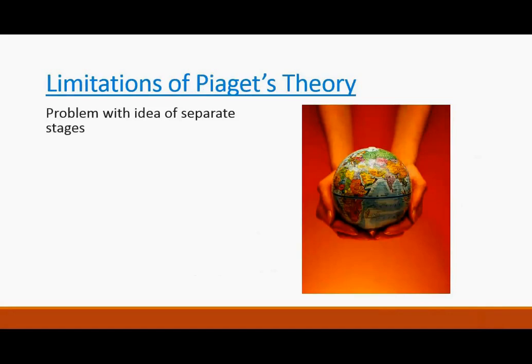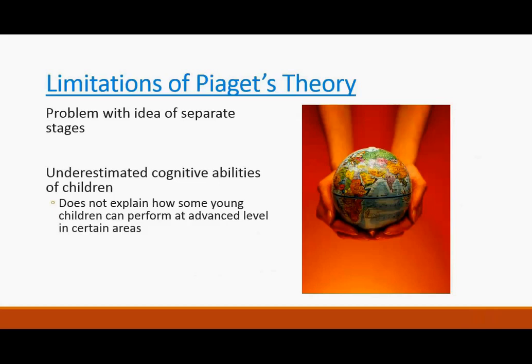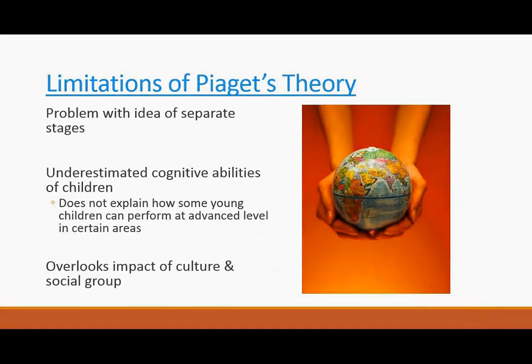Limitations of Piaget's theory: there's a problem with the idea of separate stages because development isn't that simple and things aren't separated into stages that cleanly. Piaget underestimated the cognitive abilities of children and was unable to explain how some young children can perform at very advanced levels in certain areas, like a child prodigy on piano. He also overlooked many cultural and social aspects and differences between cultures.